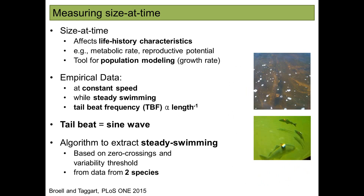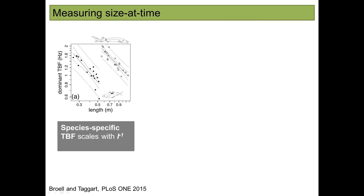I developed an algorithm to extract steady swimming in two species — short-nosed sturgeon and saithe — based on zero crossings and a variability threshold. I then calculated an estimate of dominant tailbeat frequency during steady swimming. Looking at the relationship between dominant tailbeat frequency and length for the two species — pollock and short-nosed sturgeon — tailbeat frequency does in fact scale with one over length. This is a species-specific relationship: we get two different intercepts, so we cannot confirm the idea holds universally across species, but within species tailbeat frequency scales with one over length.